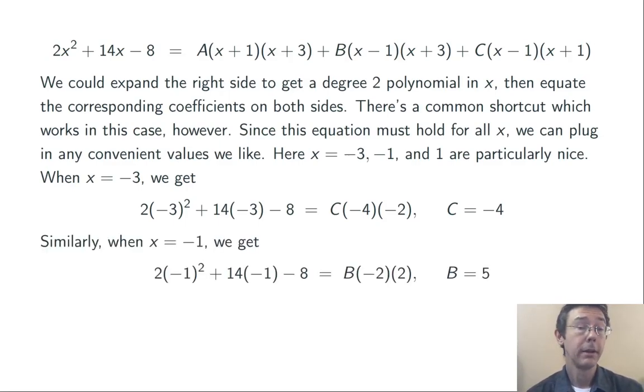Similarly, when I plug in x = -1, the A and C terms on the right go away. A little bit of simplification then gives me B = 5.